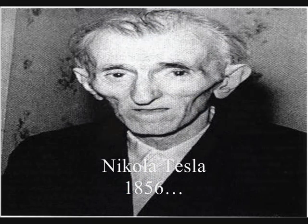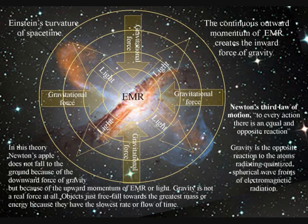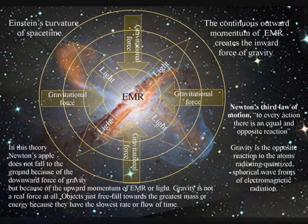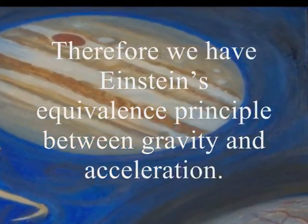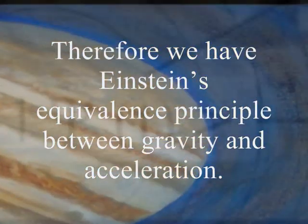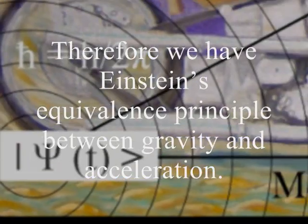In this theory, gravity is a secondary force to the electromagnetic force. Objects just free-fall towards the greatest mass or energy because it has the slowest rate that time flows.